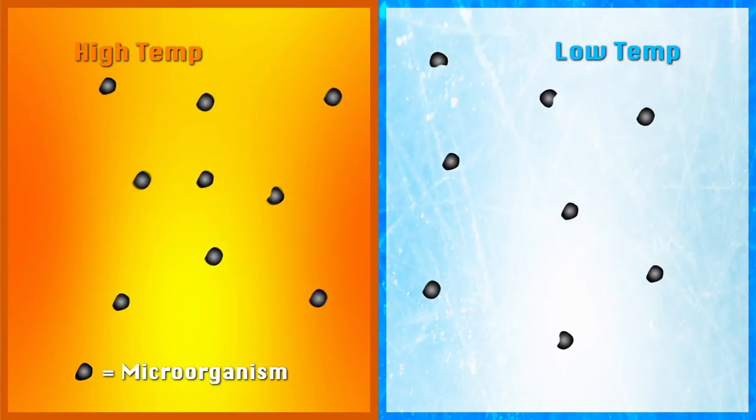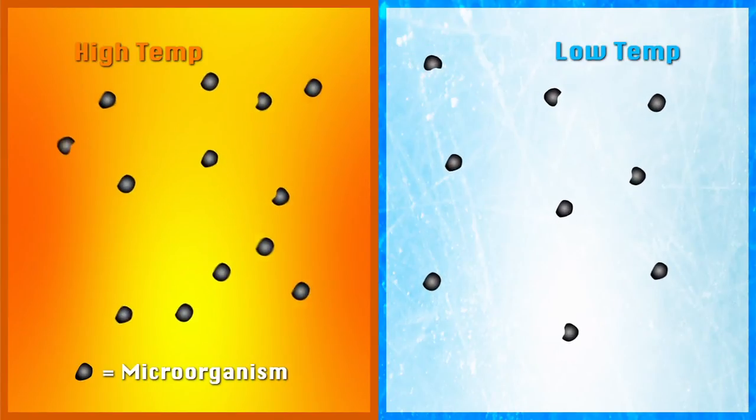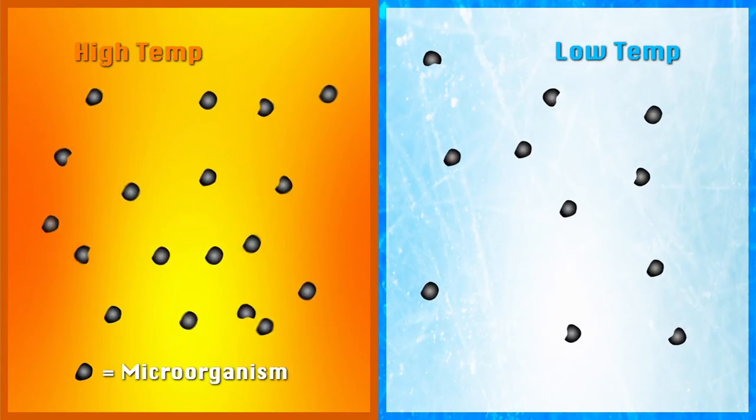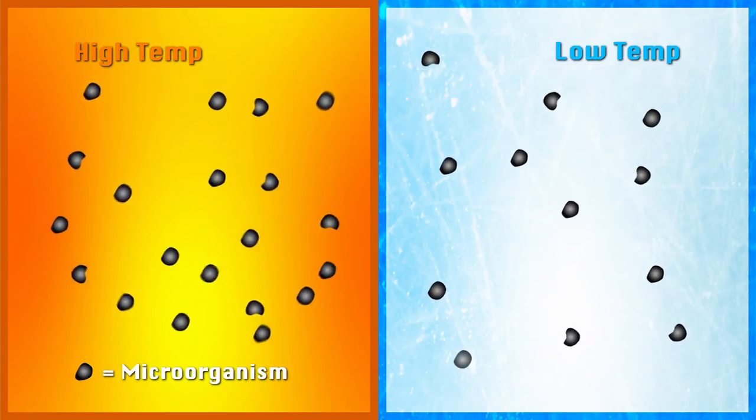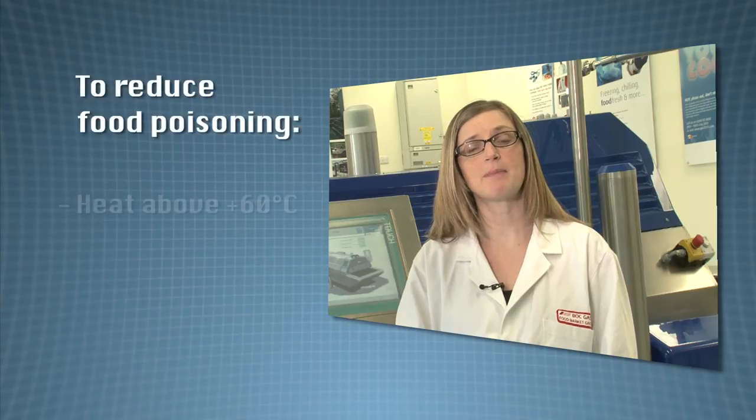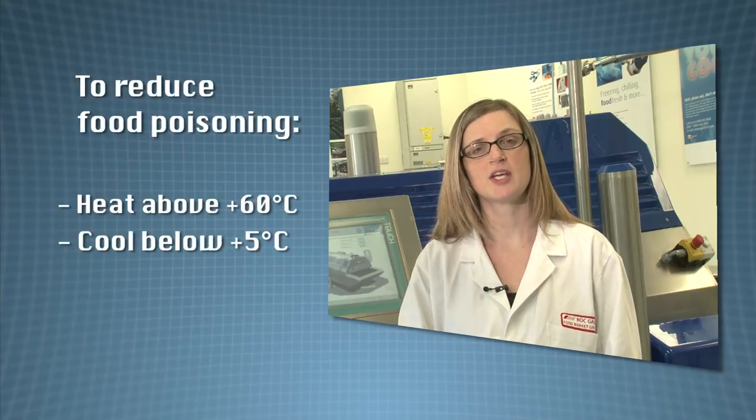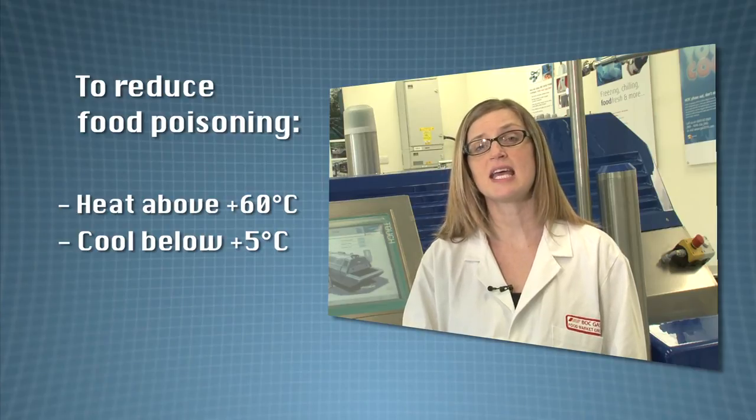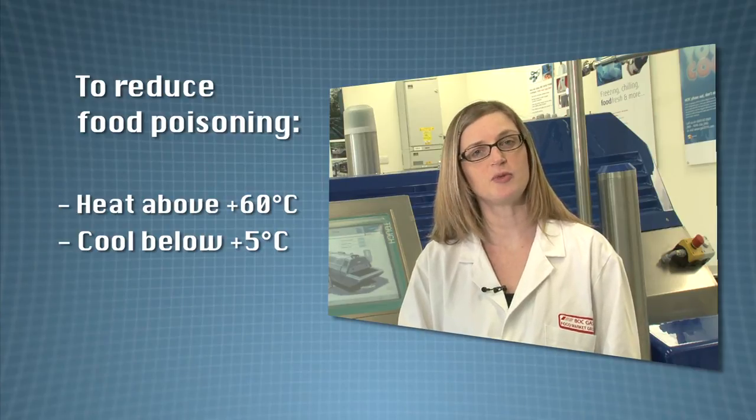When the temperature is lowered below the freezing point, the growth of microorganisms decreases rapidly and will completely cease at a certain temperature. This is due not only to the lowering of the product's temperature, but also to the formation of ice. Microbes need free liquid water in order to flourish. They are most active between the temperatures of plus 60 and plus 5 degrees centigrade. So heating above plus 60 and cooling below plus 5 minimises their impact and reduces the risk of food poisoning.